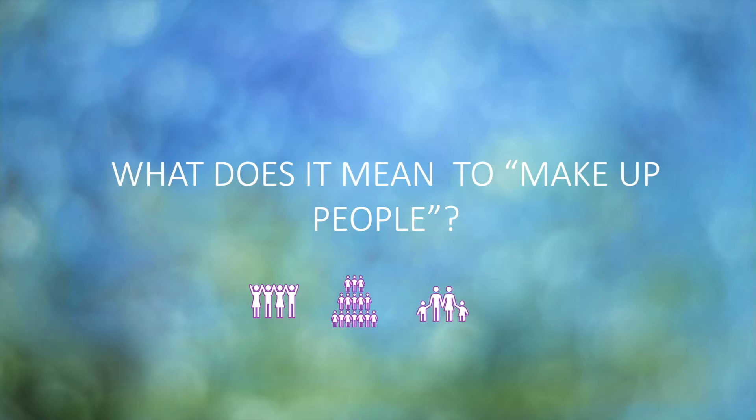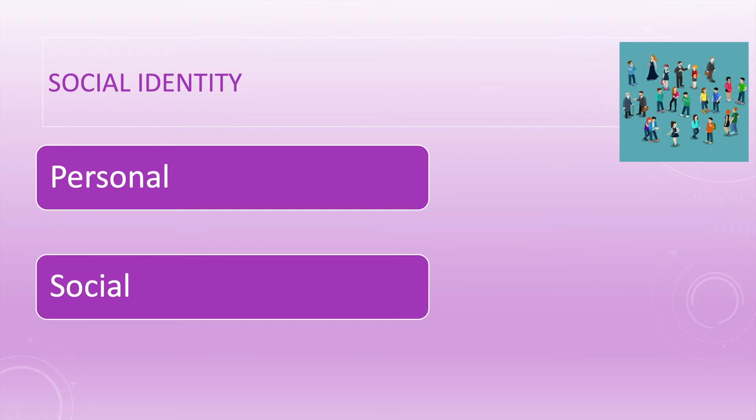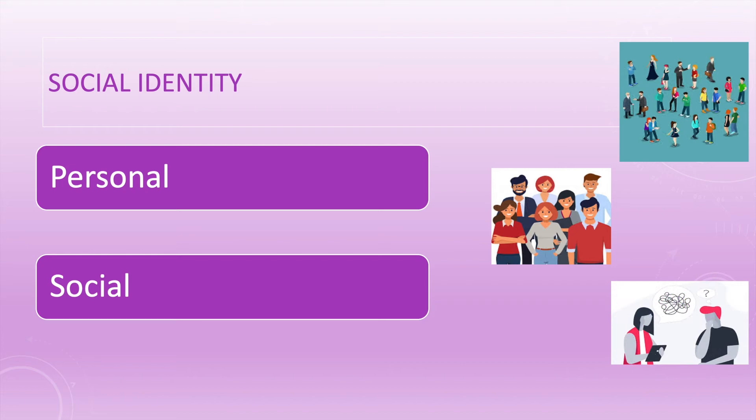What does it mean to make up people according to Ian Hacking? To understand this term, one must first understand social identity, which is both personal and social. Our identities are socially constructed because the categories we use to describe ourselves and others are produced when we interact with others.